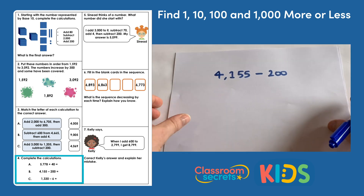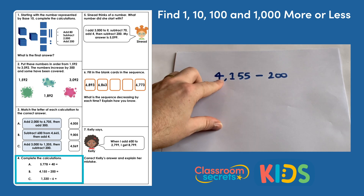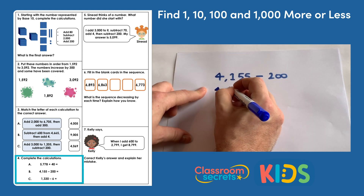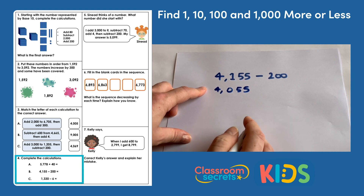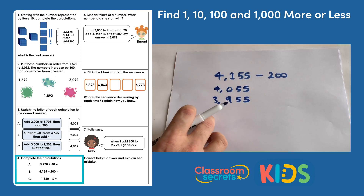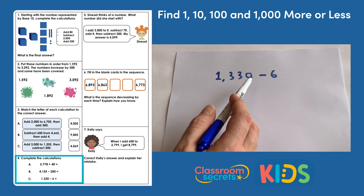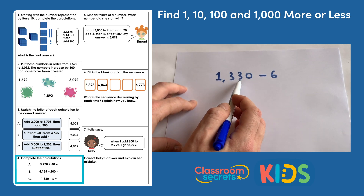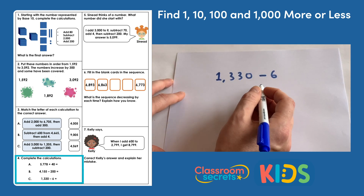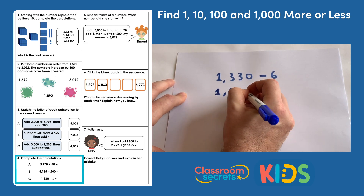For B, we have four thousand one hundred and fifty-five, take away two hundred. In this number we have one hundred; if we take away just one hundred that takes us to four thousand and fifty-five, and then taking another hundred takes us down to three thousand nine hundred and fifty-five. The last calculation is one thousand three hundred and thirty, take away six. We're taking away six ones but we have no ones at the moment — we're in three tens — so we'll be down into one thousand three hundred and twenty-something. Six away from the ten we have gives one thousand three hundred and twenty-four.